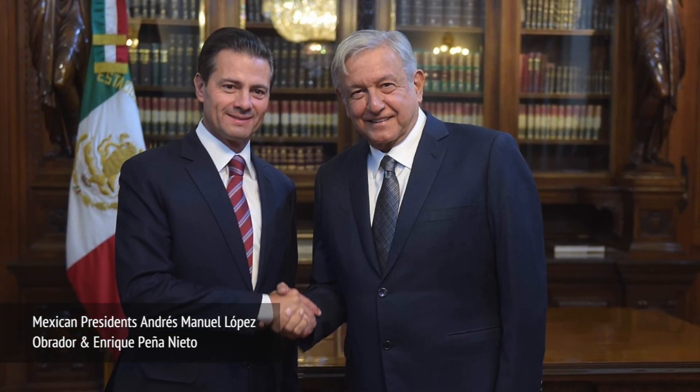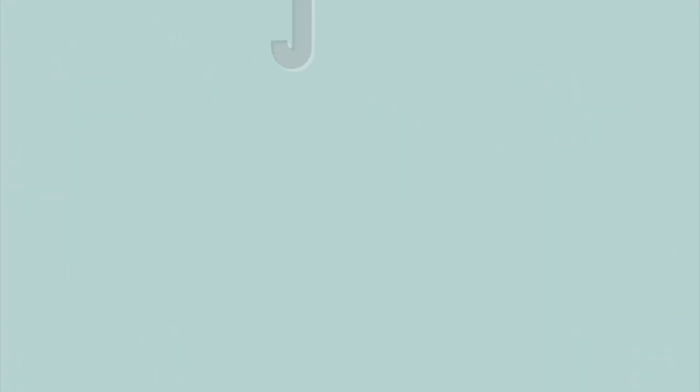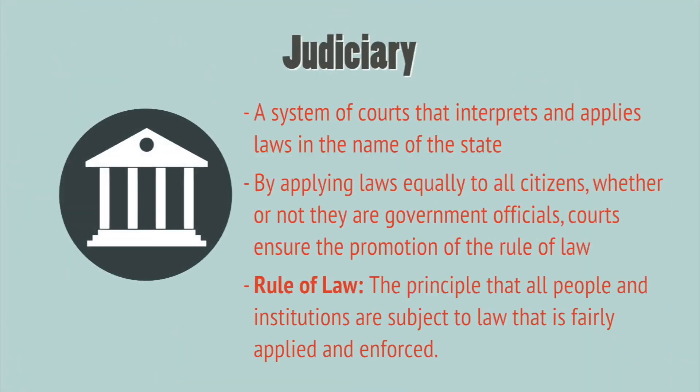In countries like Mexico and Nigeria, the two roles are combined and a president acts as both head of state and head of government. All liberal democracies today have established what we call the rule of law, or the sovereignty of law over the people and government officials. This principle means that states are governed by laws and not by decisions made by government officials. Making sure this happens is ultimately the role of the judiciary — a system of courts that interprets and applies laws in the name of the state. By ensuring that the law is applied equally to all citizens, whether or not they are state officials, judges ensure the promotion of the rule of law.